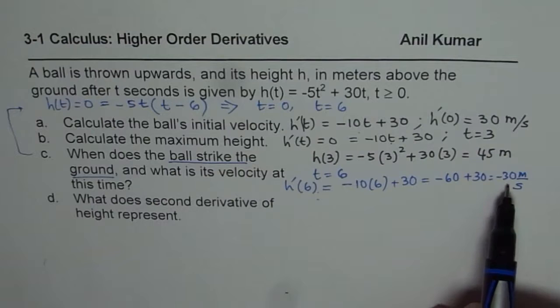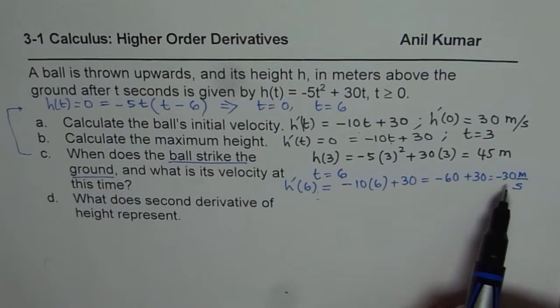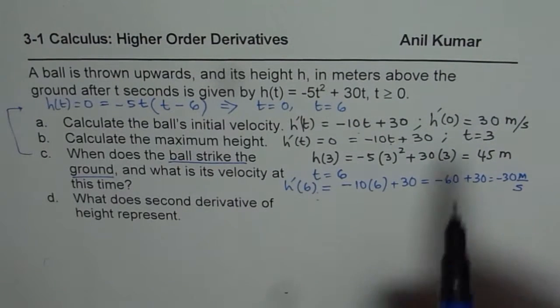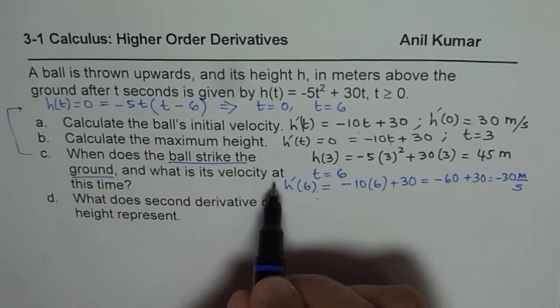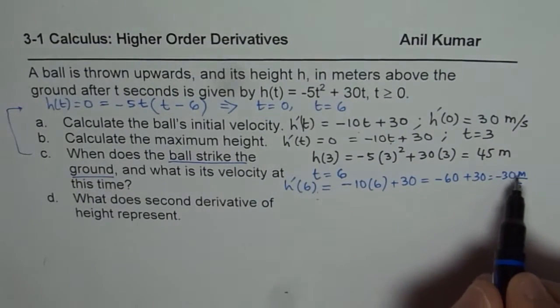Minus here indicates moving downwards. So it is moving downwards when it strikes the ground. So what we get here is that the velocity at which it hits the ground is 30 meters per second, negative means going downwards.